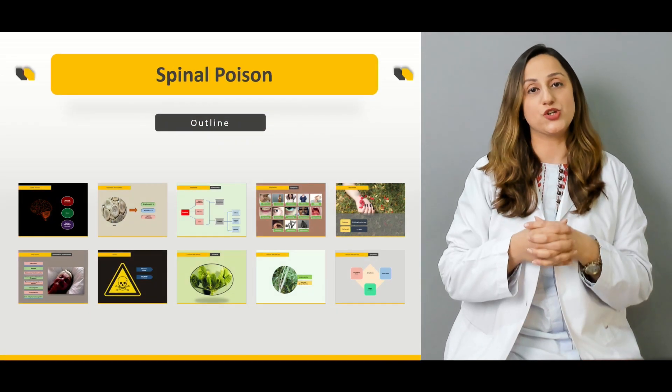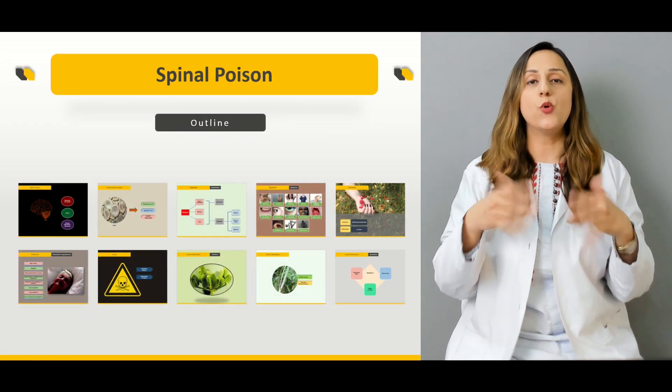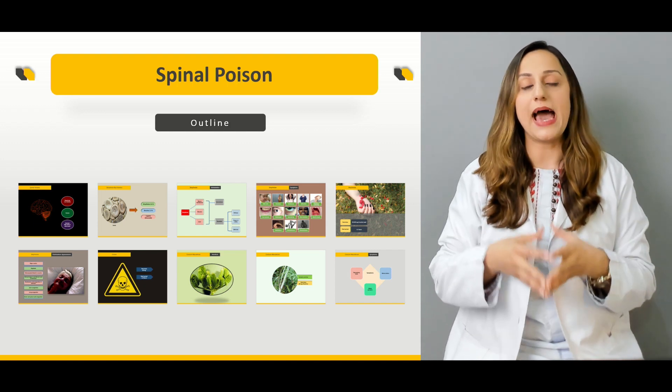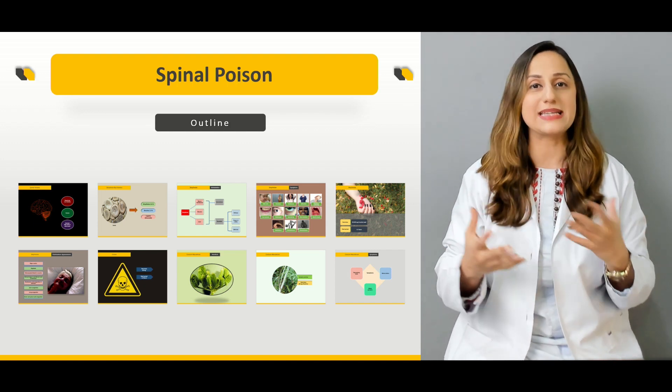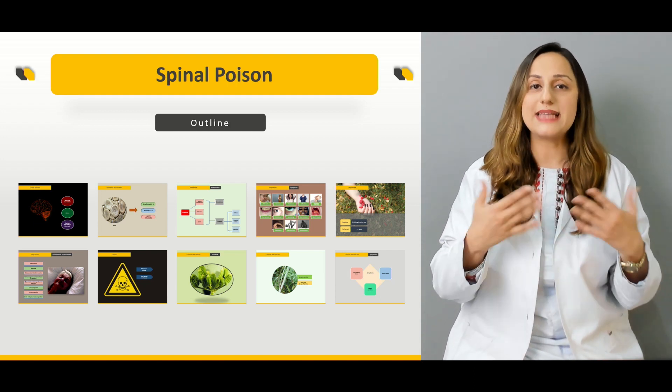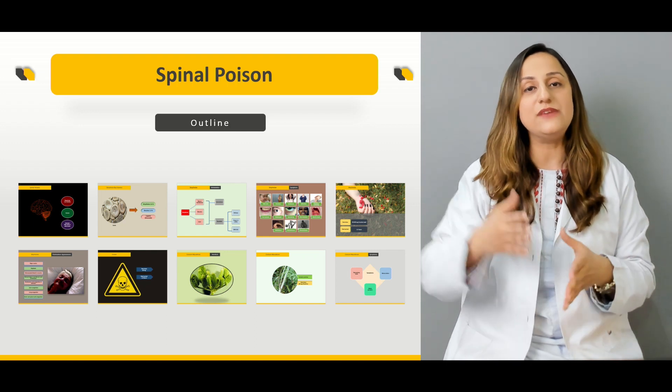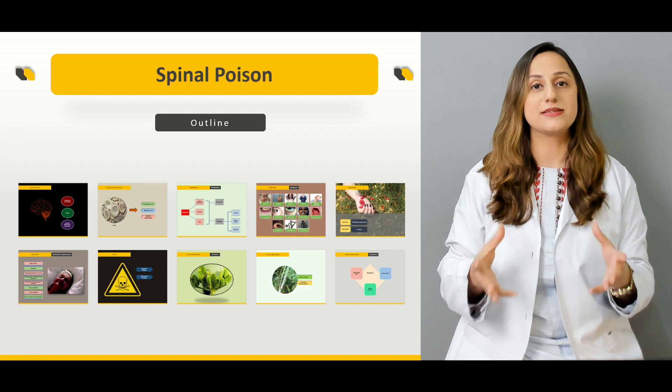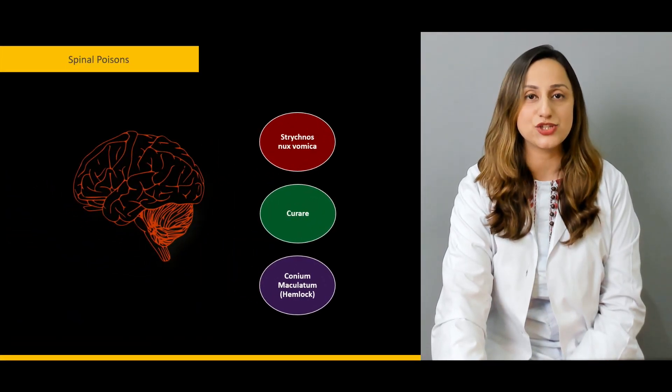The major outline of this lecture includes the most common poisons involving strychnine, conium, and curare poisoning. We'll be discussing the clinical features related to them, the signs and symptoms, and the post-mortem appearances of these spinal poisons in detail in this lecture.